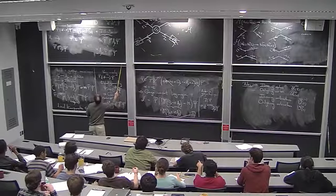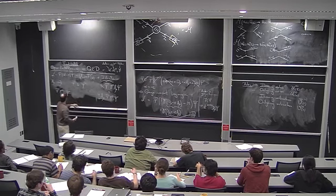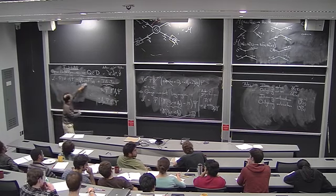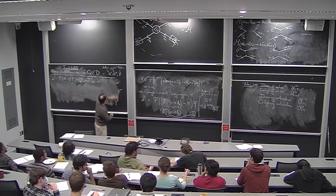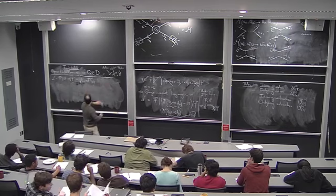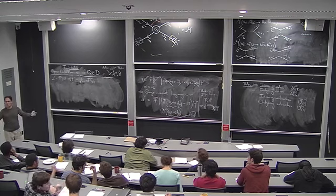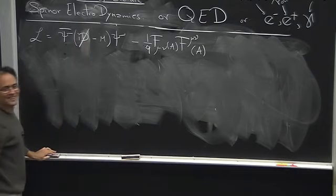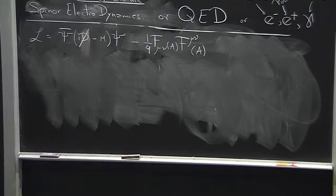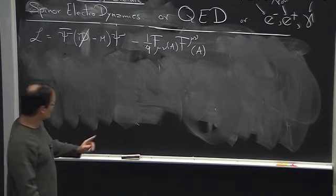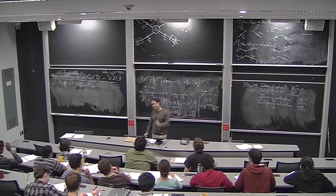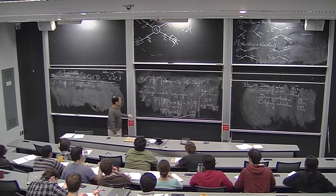Now we can write our Lagrangian in the super fancy form using the covariant derivative D-slash. That's all we had to do from the beginning — all that work just to put this slash.